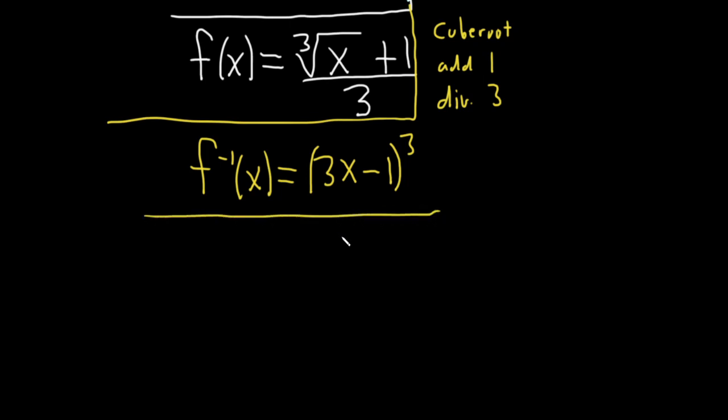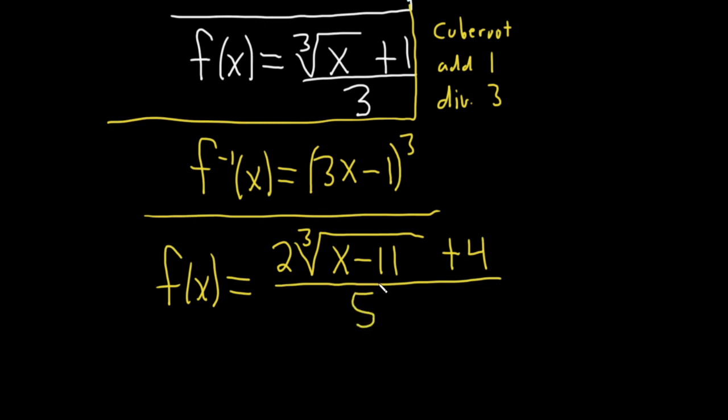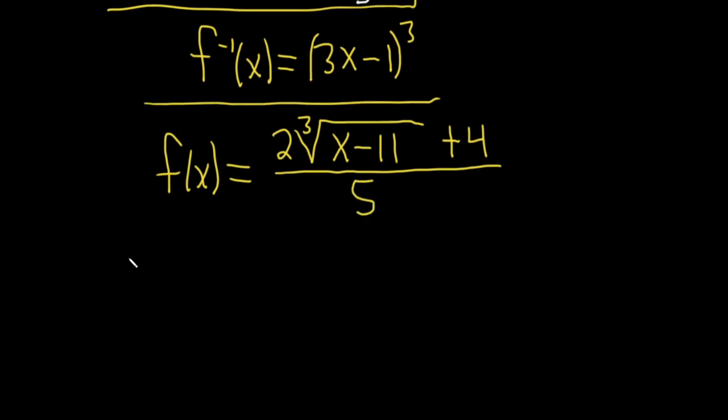How about f of x equals, and let's see, how about 2 times the cube root of x minus 11 plus 4, all divided by 5. So, I'm definitely going to write some stuff down on the side here, or maybe down here as a mental note. So, the first thing it does is it takes x and subtracts 11, so I'm just going to put sub 11. Then it takes the cube root, so I'll put cube root. Then it multiplies by 2, so mult 2. Then it adds 4, so add 4. Then it divides by 5, divide by 5.